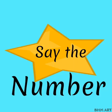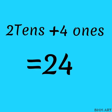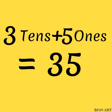Say the number. 2-10s and 4-1s. Yes, the number is 24. When we add 3-10s and 5-1s, we get the number 35. 3 is the 10s, that is 3-10s, and 5-1s.